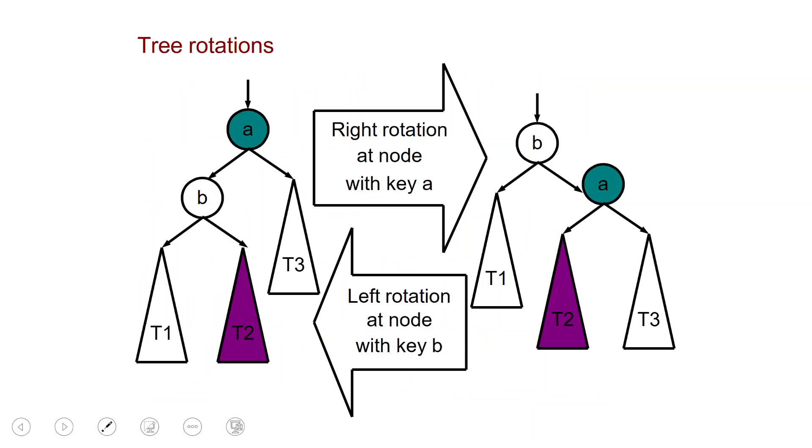This is how a tree rotation works. So here is a tree. The way it's written here is that we have a node with key A, which is a child of some other node. A has a left child B,